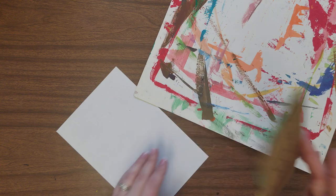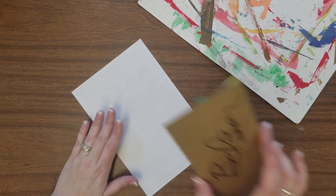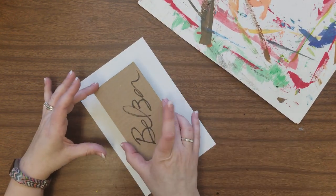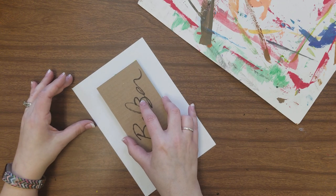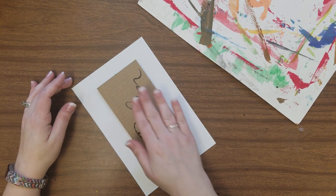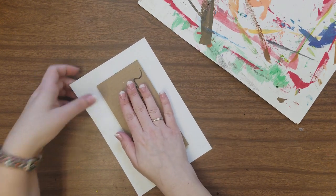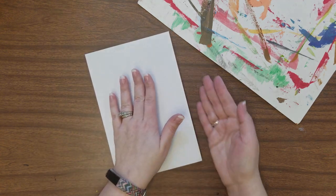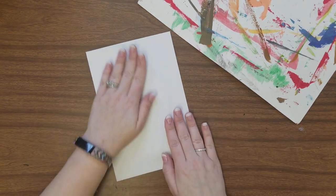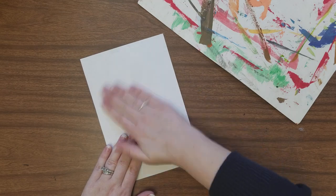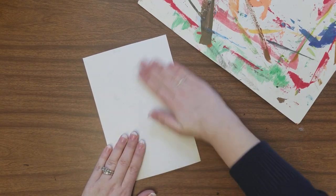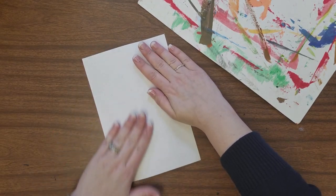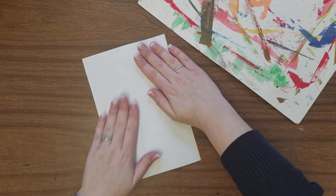So for this step, you're going to try to center your collagraph right in the middle of your clean sheet of paper you're printing. And then you want to carefully flip this over. And using a flat hand, rub. And I can feel the bumpies through it. So I want to make sure I rub all edges, all of my foam shapes.